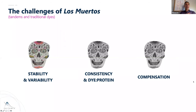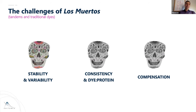The three things I want to lay out and do this using data: essentially peel back the curtain on tandem dyes, talk about traditional dyes and their stability and variability, talk about consistency in this idea of dye-to-protein ratio, how we're conjugating fluorophore to antibody and all the impacts of that. And then we'll also spend a brief point of time talking about compensation.